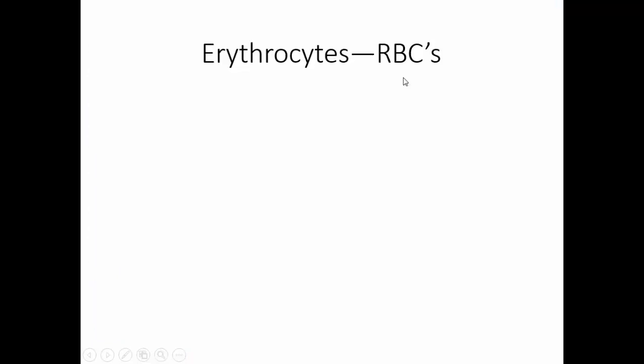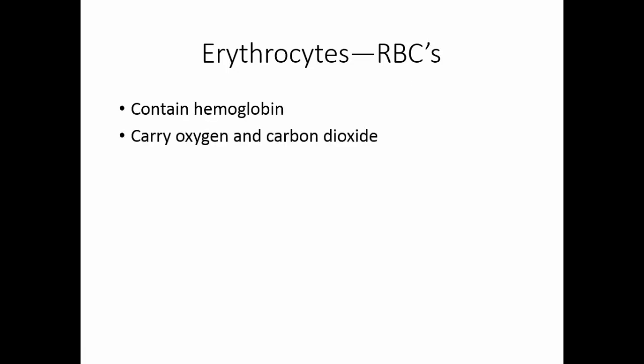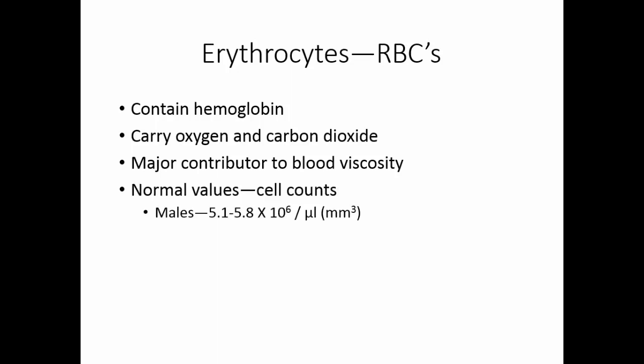Red blood cells, or erythrocytes, contain hemoglobin, which carries oxygen and carbon dioxide in our blood. Erythrocytes are also the major reason that blood is thick and sticky — they cause the viscosity. Men have about 5.1 to 5.8 times 10 to the 6th red blood cells per microliter, which is a cubic millimeter. That equals about 5,100,000 red blood cells. Women tend to have fewer: 4.3 to 5.2 times 10 to the 6th per microliter.